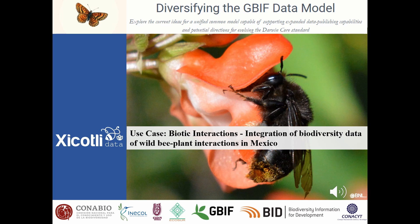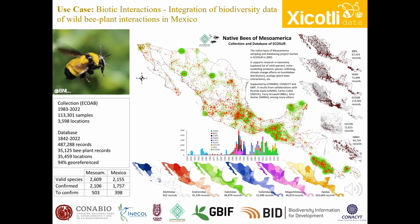Join us to discover how we are contributing to the diversification of the GBIF data model by emphasizing biotic interactions. Mexico is a country of bees with at least 2,155 valid species belonging to six families. In this infographic you can appreciate the density of native bee data for Mesoamerica. The data have been compiled and curated by the ECOAB native bee collection, which is located in the ECOSUR unit of San Cristobal de las Casas, Chiapas, Mexico.